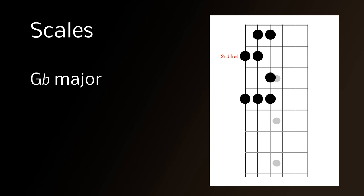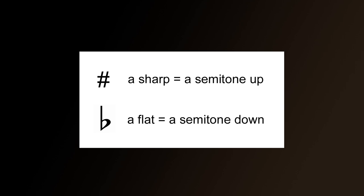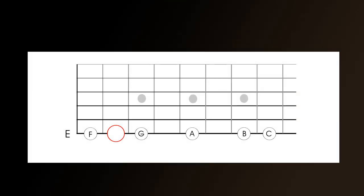Sharps and flats then are quite easy to understand, but there are one or two small issues that do cause problems. For example, overlapping notes. So to illustrate this, we'll take the second fret, which is the F sharp but also the same note is G flat.